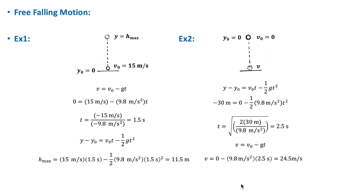Let's consider two examples. In the first example, suppose an object is thrown upward with an initial velocity of 15 m/s. We want to find the maximum height reached by this object and the time it takes to reach that height. At the maximum height, the ball stops and then starts to fall down again, so the final velocity at that point is zero.